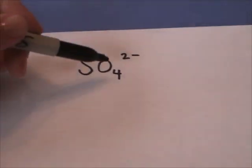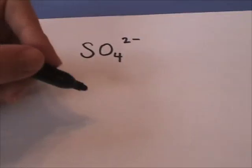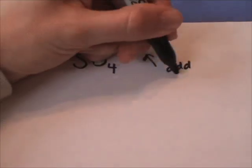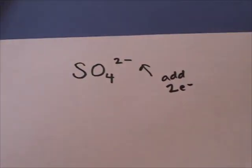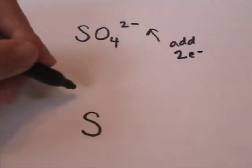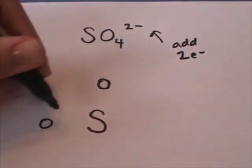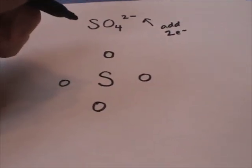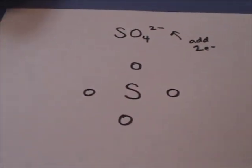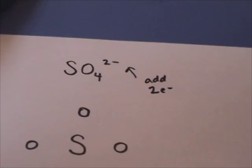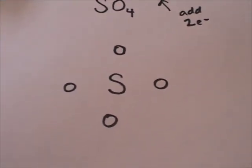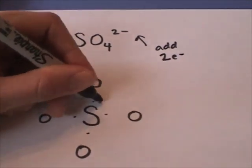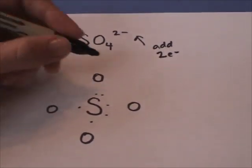Now let's draw the Lewis dot structure for SO₄²⁻, so that means we're going to have to add two electrons into our Lewis dot structure. We have sulfur with oxygen surrounding it, because oxygens don't want to bond together. Sulfur is just directly below oxygen on the periodic table, and it's in group 6A, so it has 6 valence electrons.